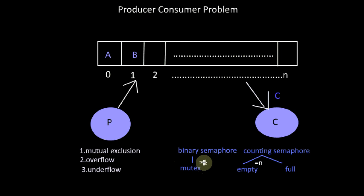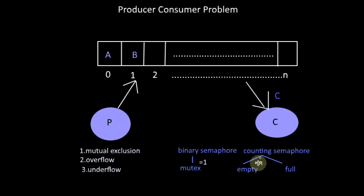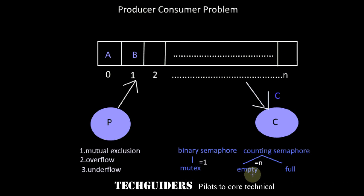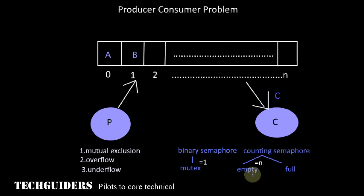Mutex is initialized with the value 1. If the value of mutex is 1, it means the process can enter the critical section; if the value is 0, the process should wait. In the beginning, all the buffers will be empty, so the number of empty buffers equals n. Thus, the semaphore empty is initialized with the value n. As long as empty has a positive value, the producer can add an item to the buffer; otherwise, the producer should wait.